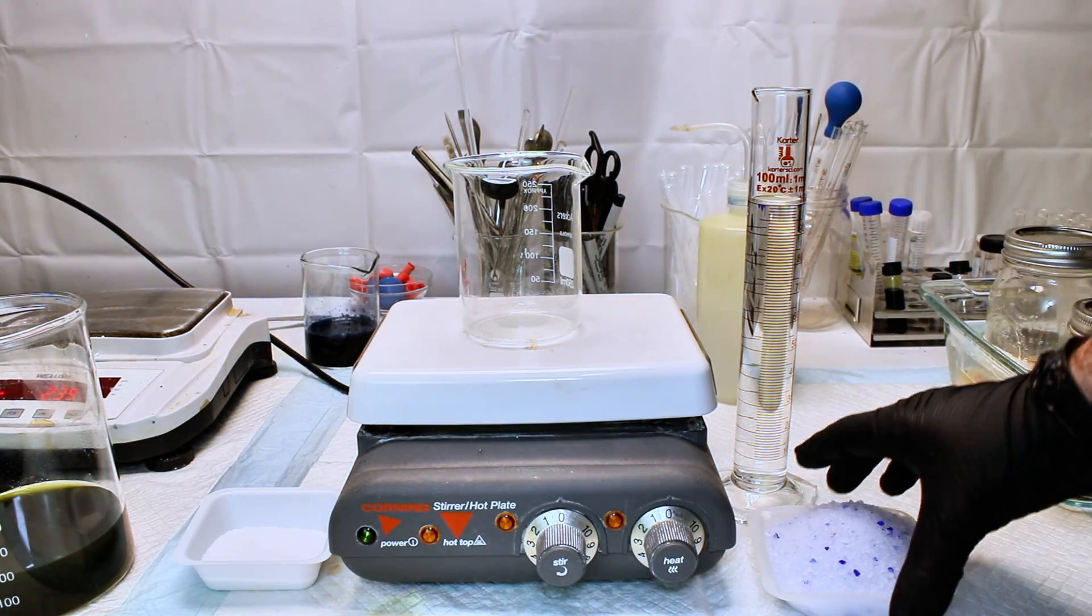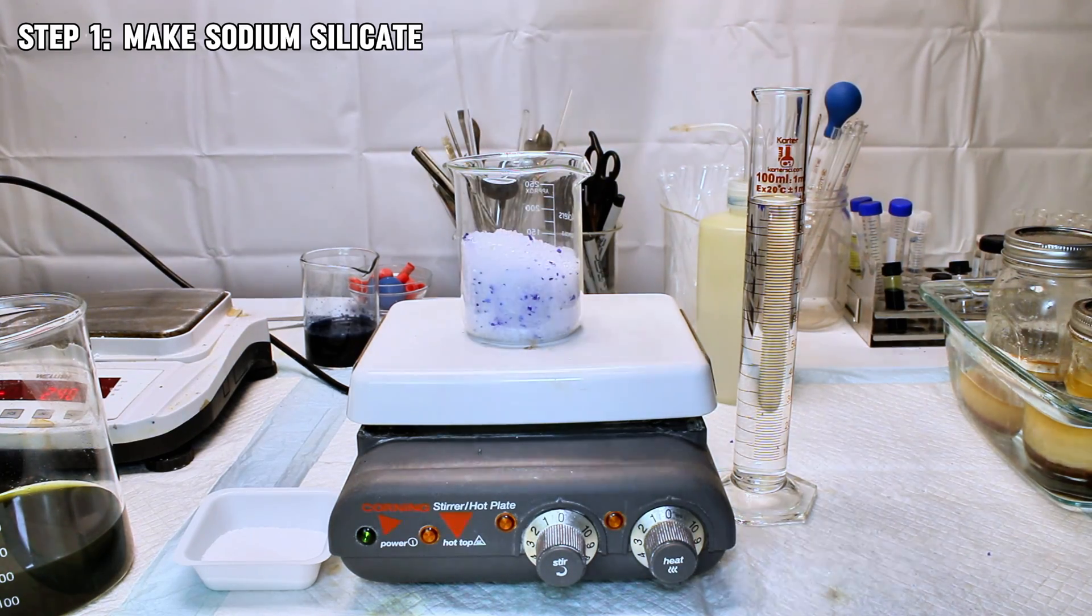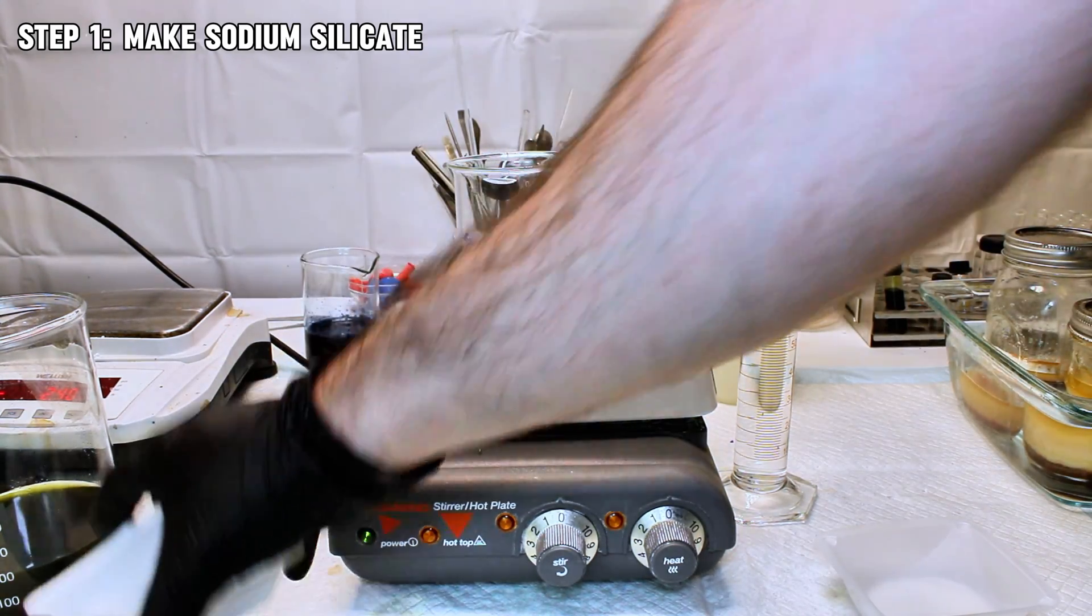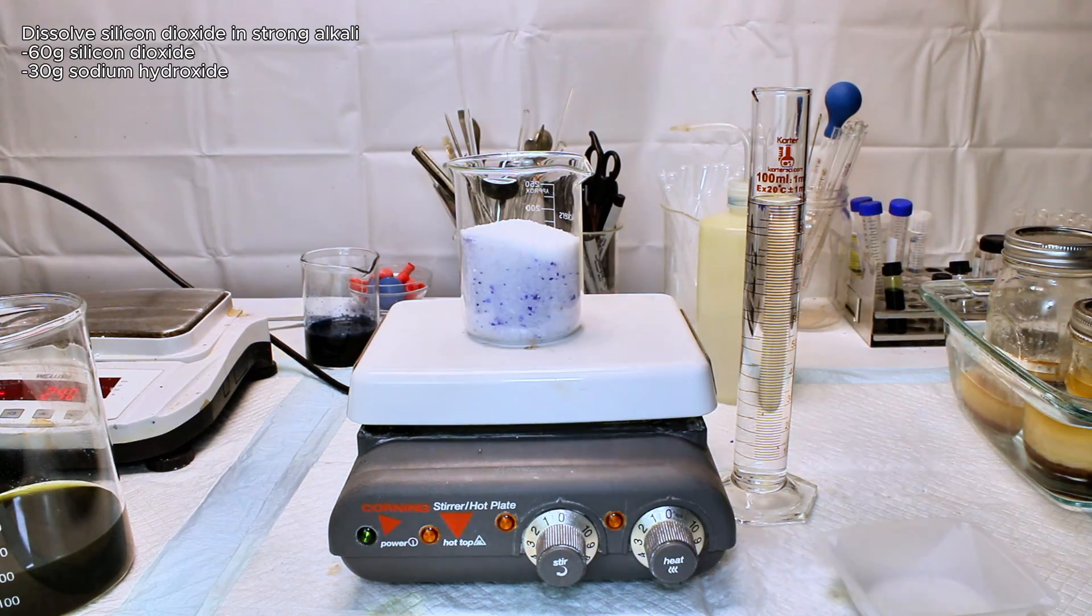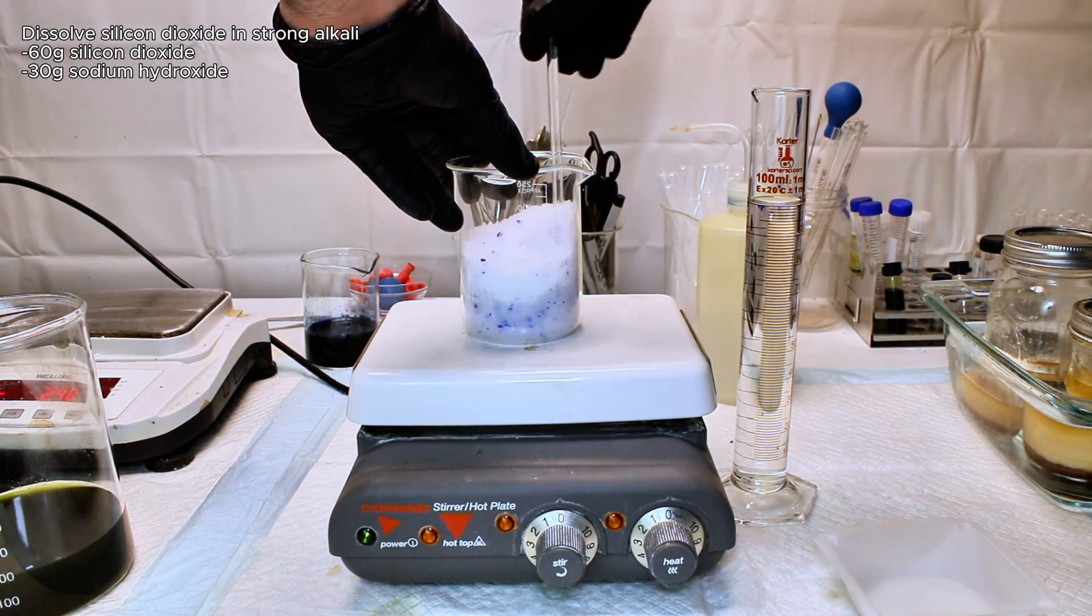To get started, I first needed to make some sodium silicate, as it isn't something I usually keep on hand. This can be done fairly easily by dissolving a source of silicon dioxide in sodium hydroxide, and my source of silicon dioxide here was crystal kitty litter.